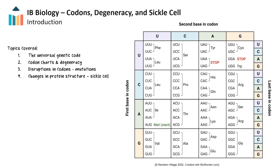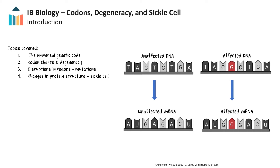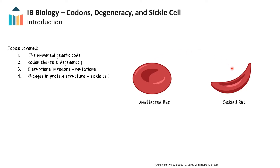We also explore the degeneracy of the genetic code, which protects against mutations. Finally, we look at disruptions in codons, or mutations, and we explore sickle cell anemia as an example of a disease caused by a point mutation. These key concepts are some of the most important topics covered in the IB biology course.